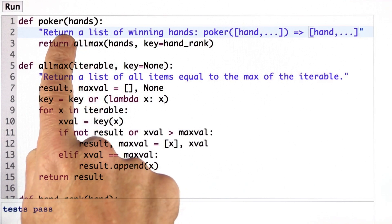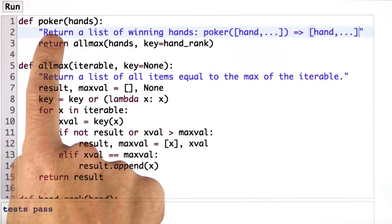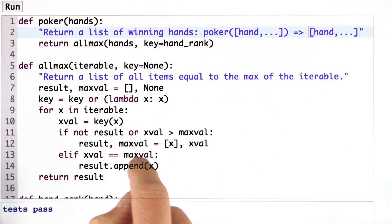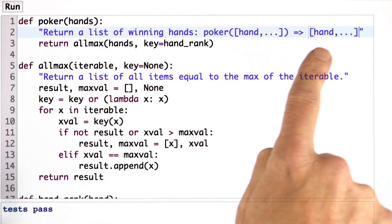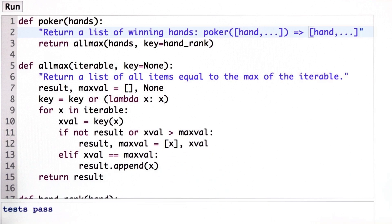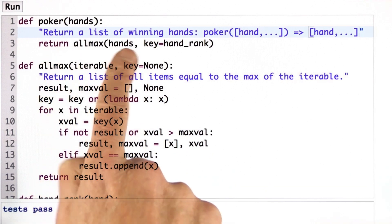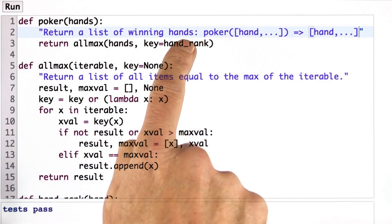I should go back and change the tests for poker, so that instead of returning a single hand, they return a list of the single hand for the tests I have so far. And then I should also add some more tests where there are some ties and make sure that it handles that properly.